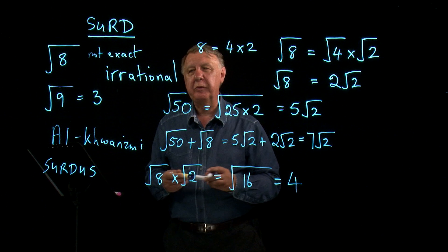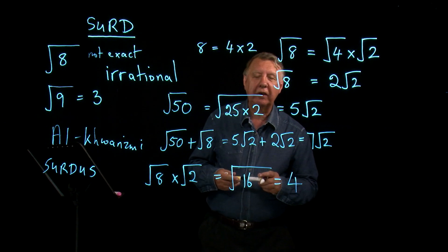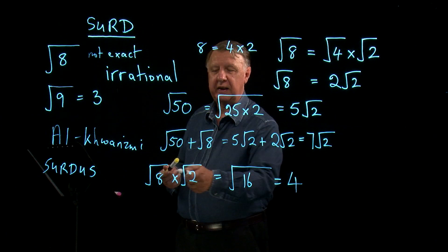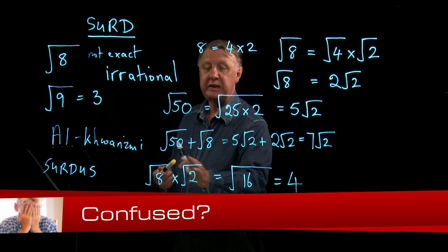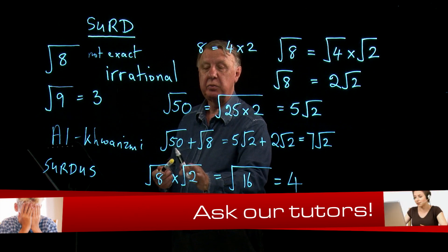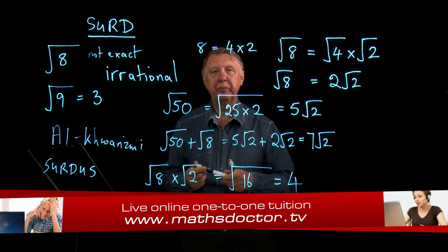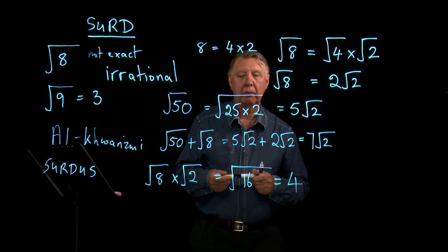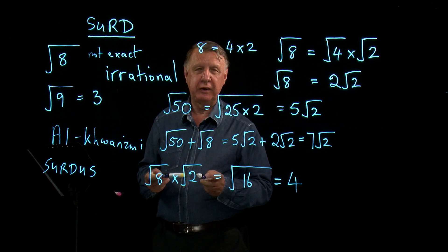Now, this is a bit scary. We're getting into dangerous ground, I like to think, because here we're saying we've got these two silent numbers. They don't equal anything exact. But we multiply them together and we get an exact answer. I'll leave you thinking on that one. That's worrying, isn't it?